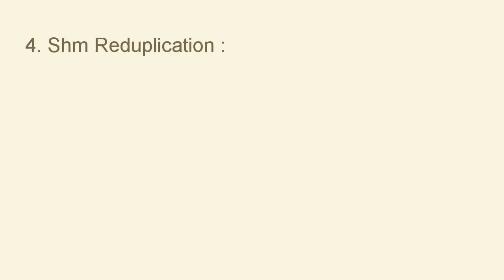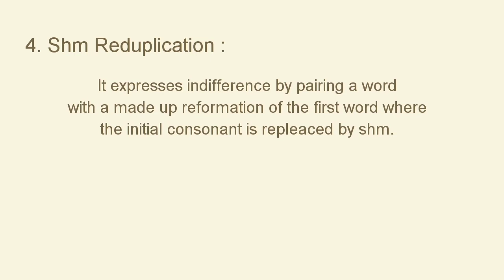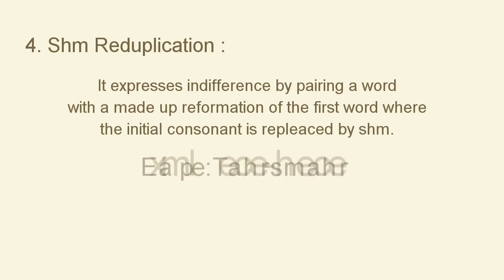The next type is shm reduplication. Shm reduplication expresses indifference by pairing a word with a made-up reformation of the first word, where the initial consonant is replaced by shm. For example, teacher-shmeacher.